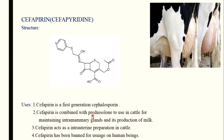Cephapyridine is a first generation cephalosporin. It is combined with prednisolone, which is a steroidal hormone. This combination is used in cattle for maintaining intramammary glands and promoting milk production — it helps increase the size of the mammary glands. Cephapyridine also acts as an intra-uterine preparation in cattle. However, cephapyridine has been banned for use in human beings because it leads to hormonal damage or hormonal imbalance.